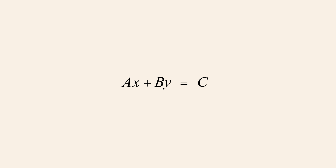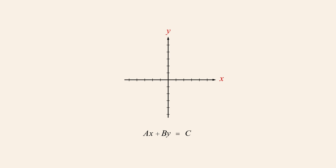The standard form of a linear equation in x and y is written as ax plus by equals c, where a, b, and c are constants and at least one of the coefficients a or b must be non-zero. The term 'linear' reflects the fact that the graph of an equation of this form will be a straight line in the x-y plane.